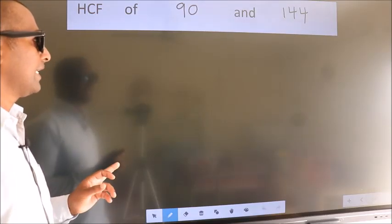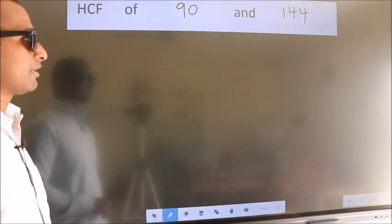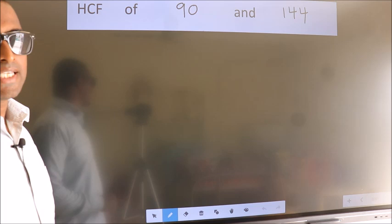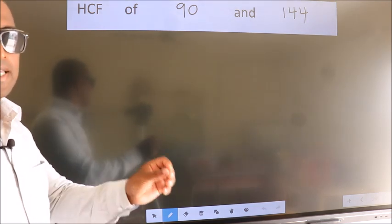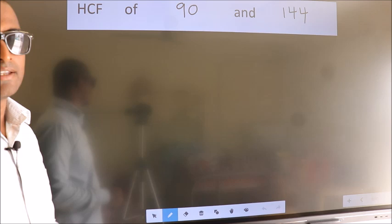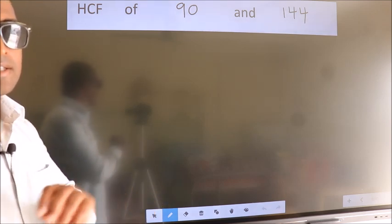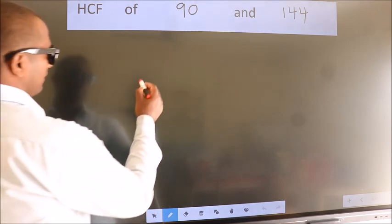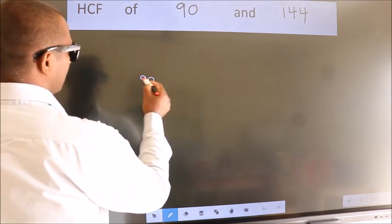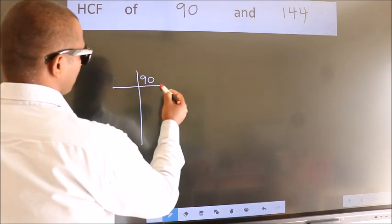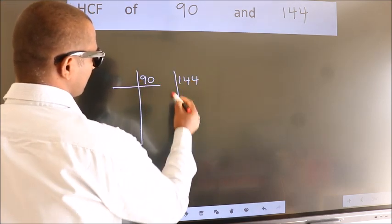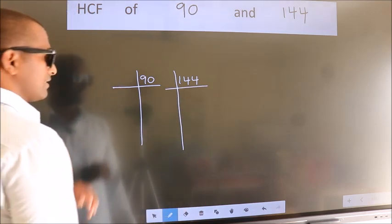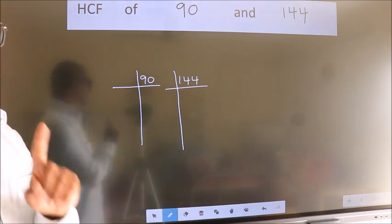HCF of 90 and 144. To find the HCF, we should do the prime factorization of each number separately. What I mean is, see: 90 here, 144 here. This is your step 1.